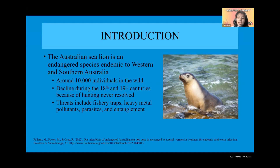A lot of these species have bounced back, but the Australian sea lion has not. There were only around 10,000 individuals left in the wild. Some of the threats to the Australian sea lion include fishery traps, heavy metal pollutants, parasites, and entanglement.